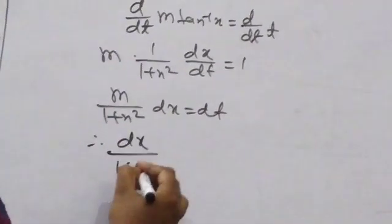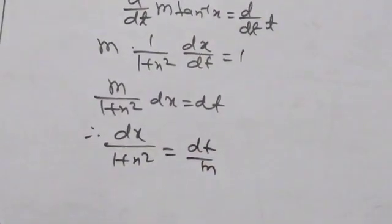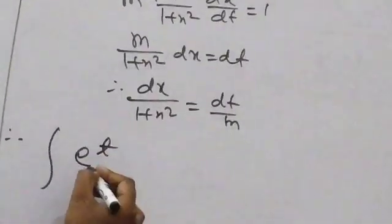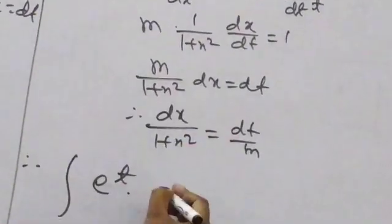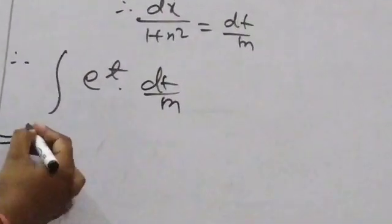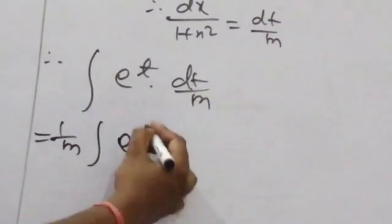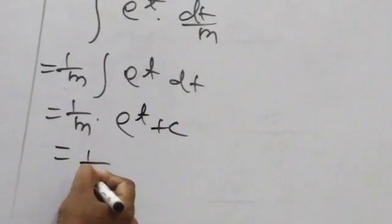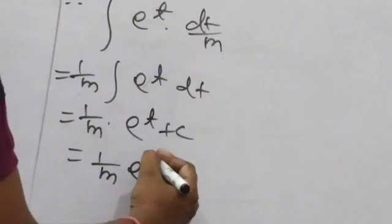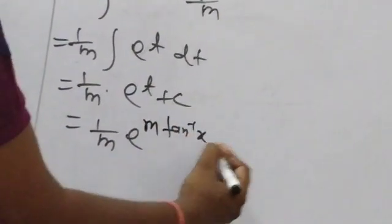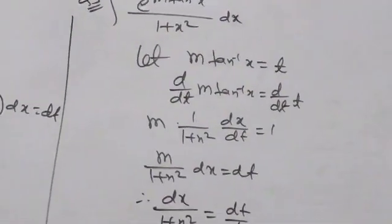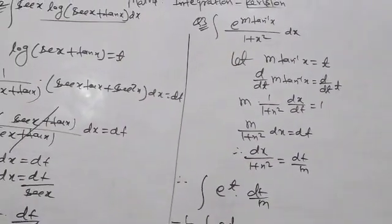Therefore the integral becomes (1/m) · ∫e^T dT = (1/m)·e^T + C. Substituting back T = m·arctan x, the answer is (1/m)·e^(m·arctan x) + C. Suppose a value, differentiate both sides, cancel, apply formula, get the answer.